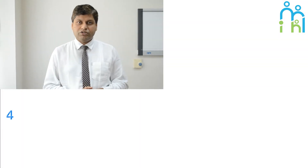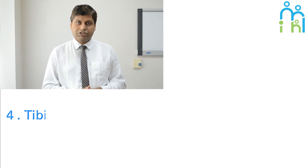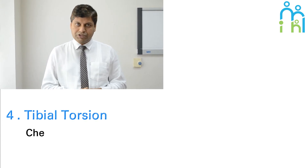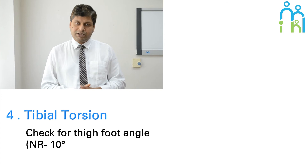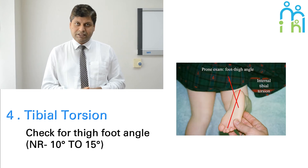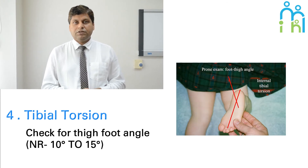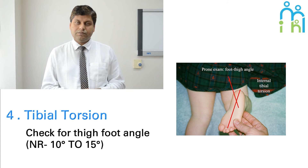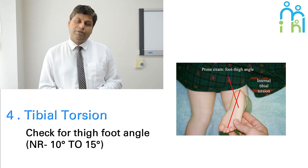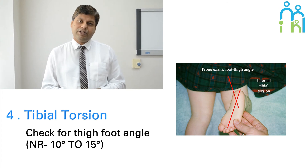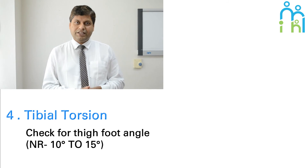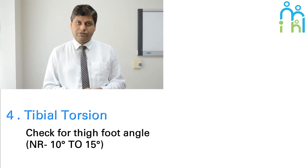To check tibial torsion, we ask the patient to lie down in the prone position and flex the knee to 90 degrees, then check the thigh-foot angle. Normally the thigh-foot angle will be between 10 to 15 degrees. But in cases of tibial torsion, it is more than 15 degrees.